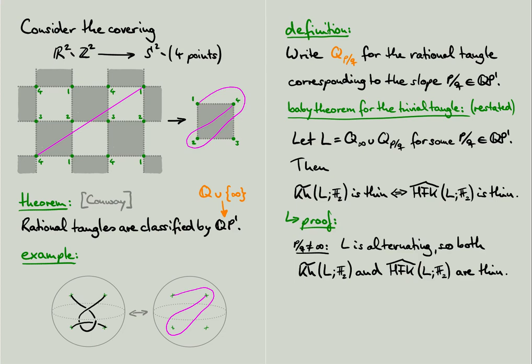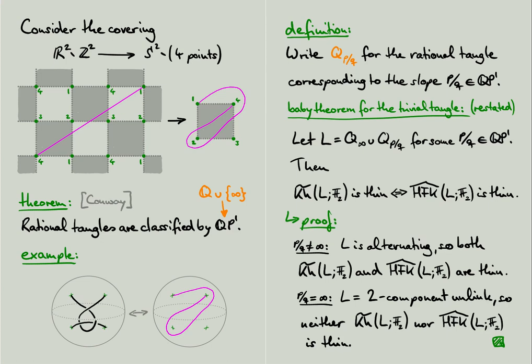The proof of this is straightforward. We distinguish two cases. If the slope of the second tangle is not the infinity slope, then it is easy to see that the link L is alternating. So by the theorem from earlier, both the Khovanov homology and Hfk hat are thin. If, on the other hand, the slope of the second tangle is equal to the infinity slope, then L is the two-component unlink, and a calculation shows that neither of the two homology theories is thin.